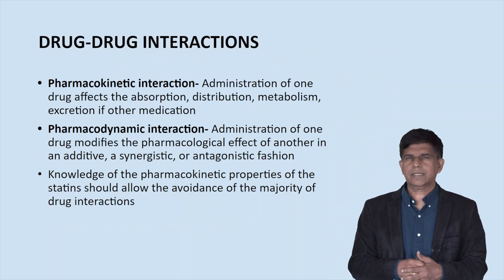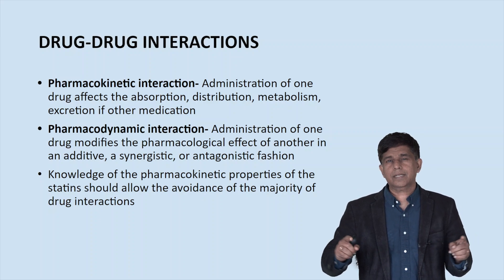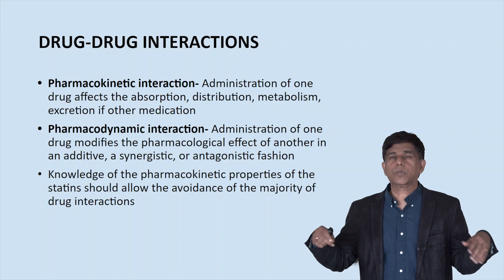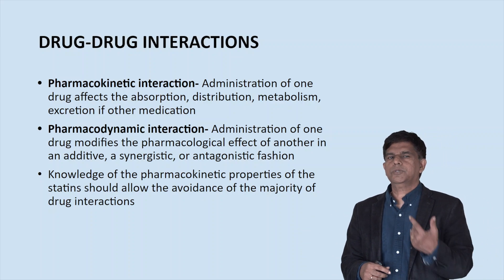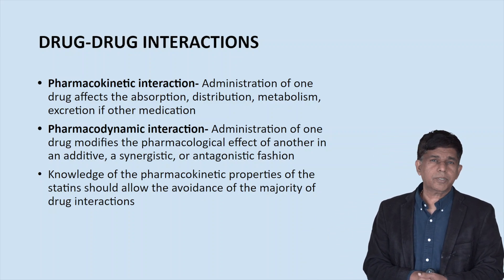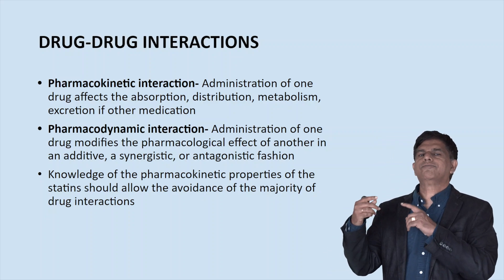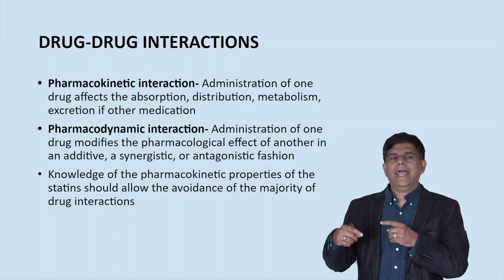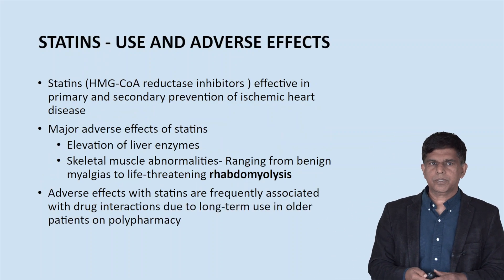When you talk about drug-drug interaction, there are two types of interaction. One is pharmacokinetic and the other one is pharmacodynamic. Pharmacokinetic means administration of the drug affects the absorption, distribution, metabolism, and excretion. Pharmacodynamic means administration of the drug modifies the pharmacologic effect of another in an additive, synergistic, or antagonist fashion. Just remember those two things.